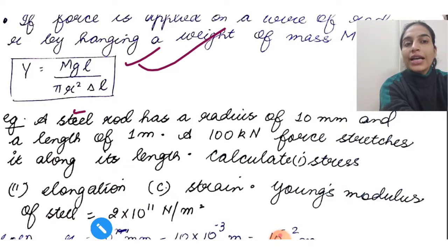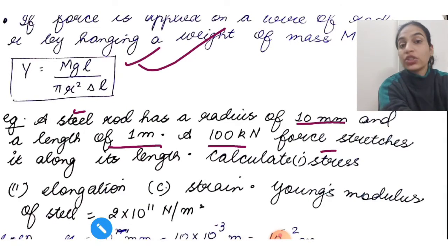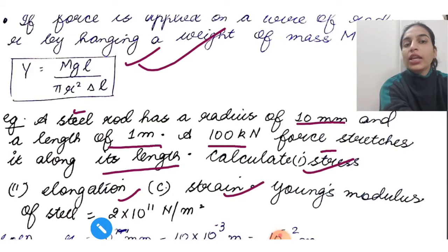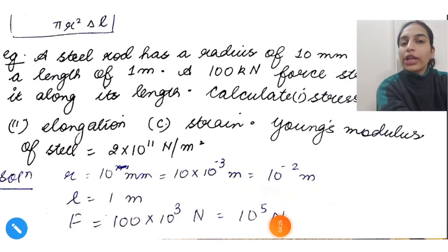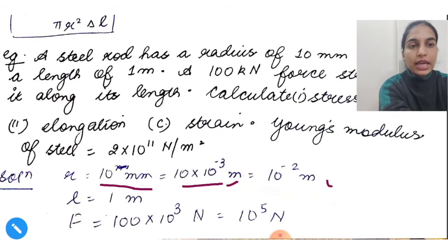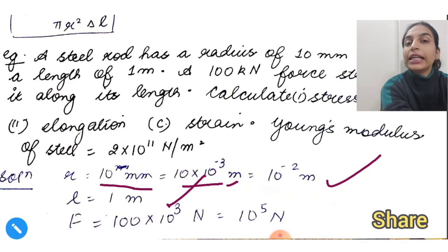Let's do a question. A steel rod has radius of 10 millimeter and length 1 meter. A 100 kilonewton force stretches it along its length. Calculate stress, elongation, and strain if Young's modulus is given. You just need to apply the formula after converting given information to SI units. Radius is 10 millimeter, meaning 10 into 10 to the power minus 3 meters, which is 10 to the power minus 2 meter. Length is 1 meter. Force given is 100 kilonewton, so 10 to the power 5 newton.